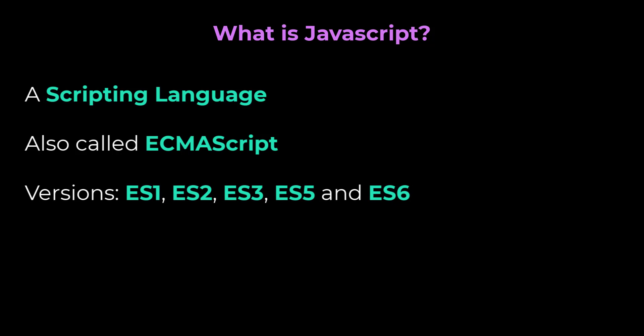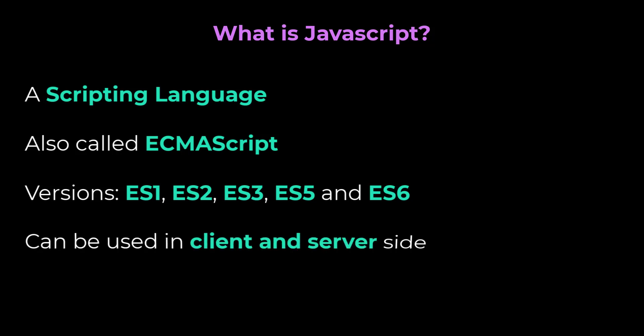ES4 was also there, but it met with a bunch of controversies and was not having sufficient support for browsers, and so it got abandoned. ES5, which was released in 2009, was the first main revision. And then ES6, which was released in 2015, was the second revision. It got so many new features. JavaScript can be used in both client and server side.